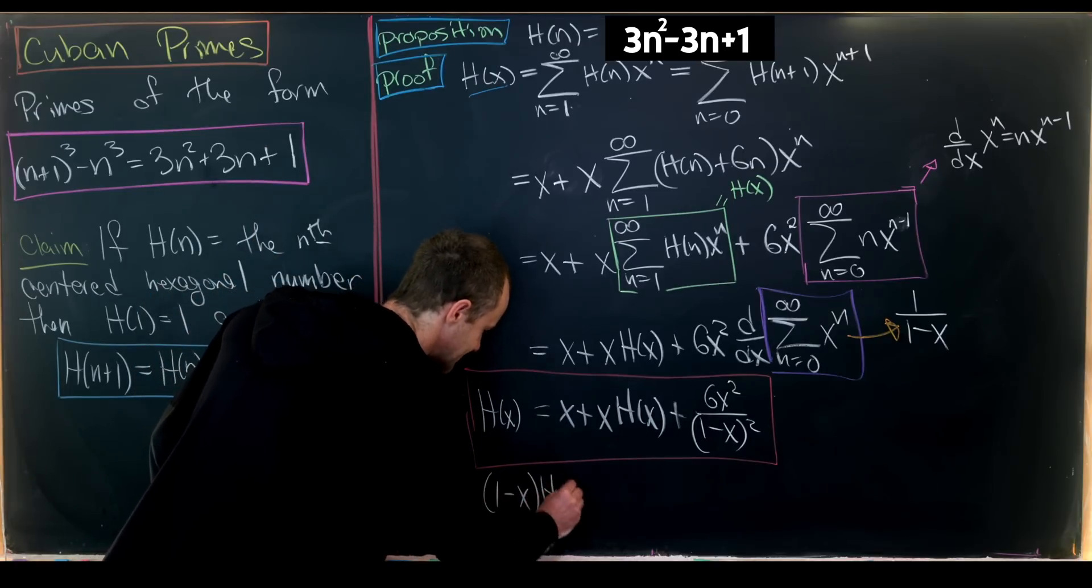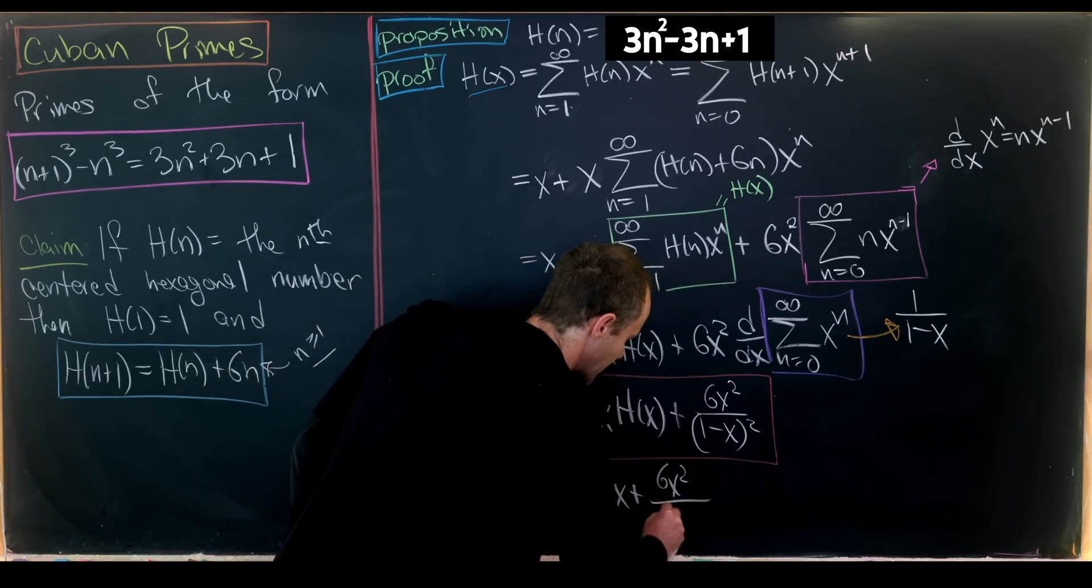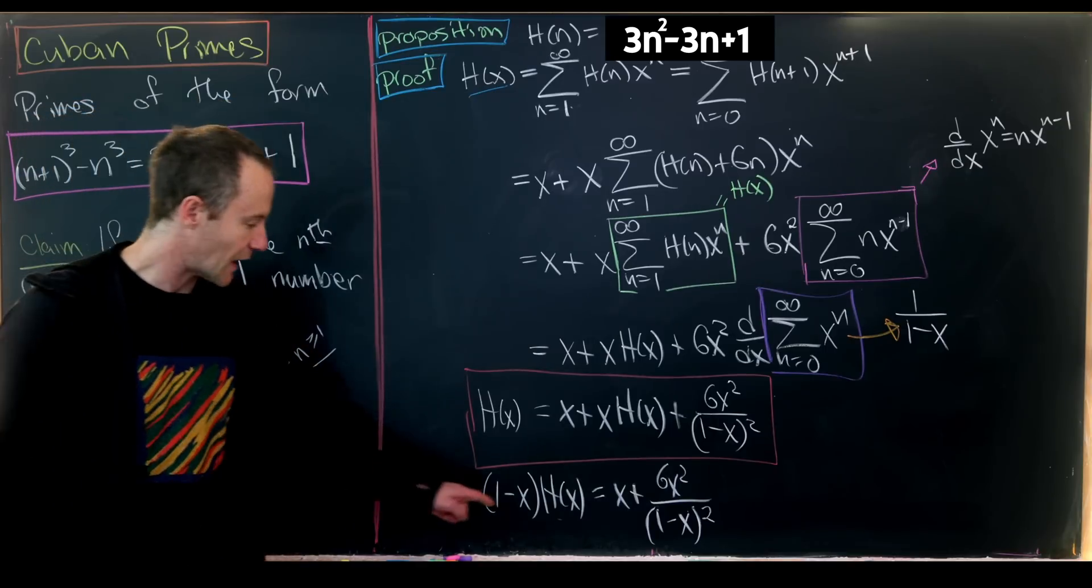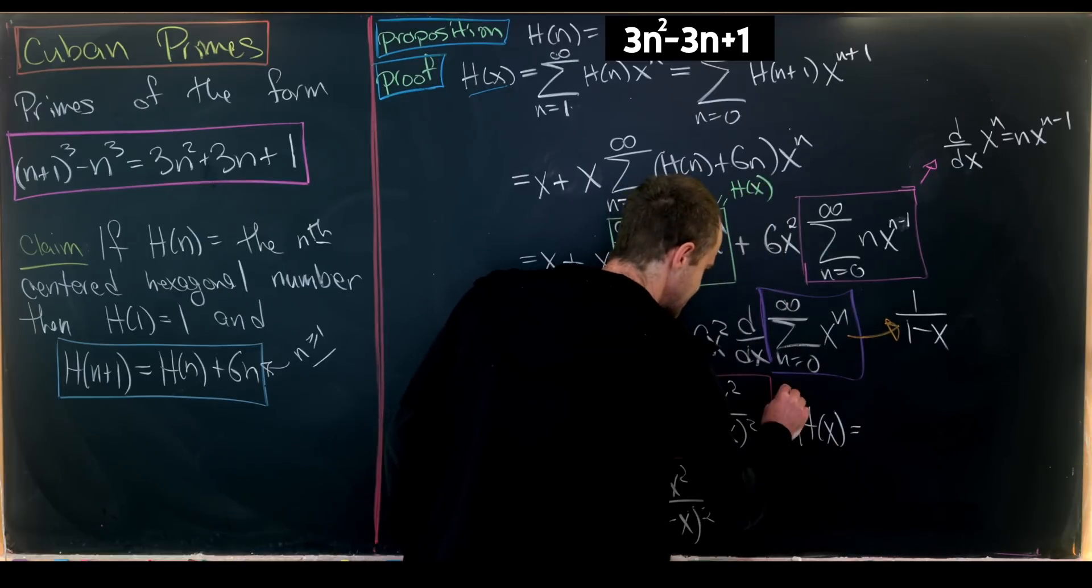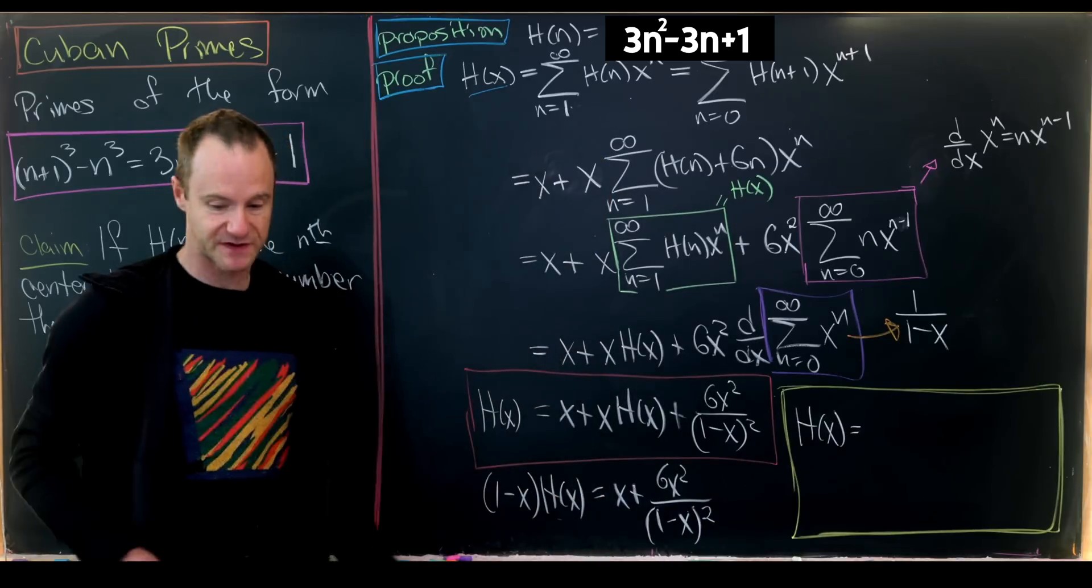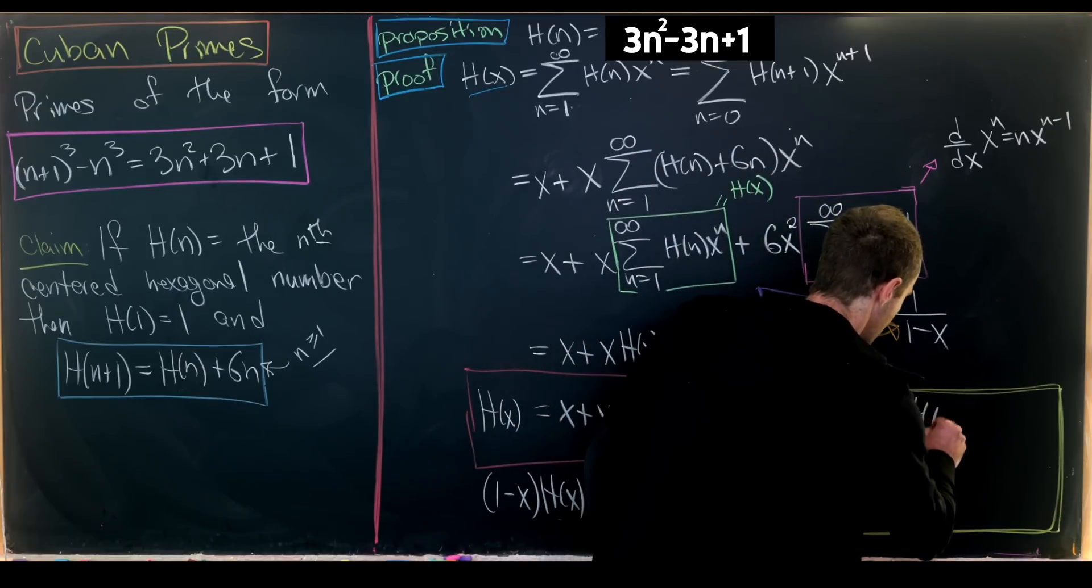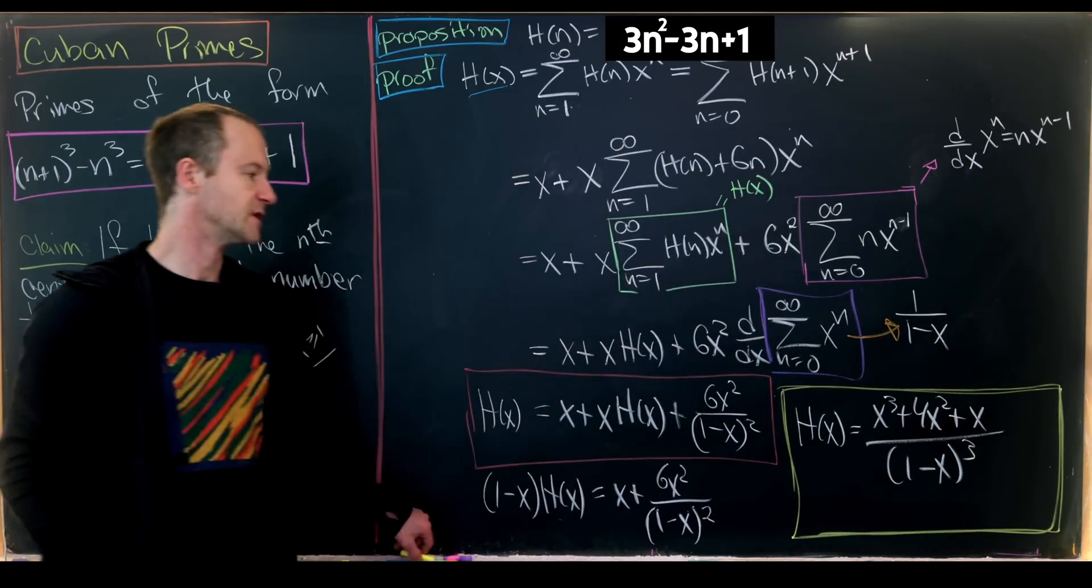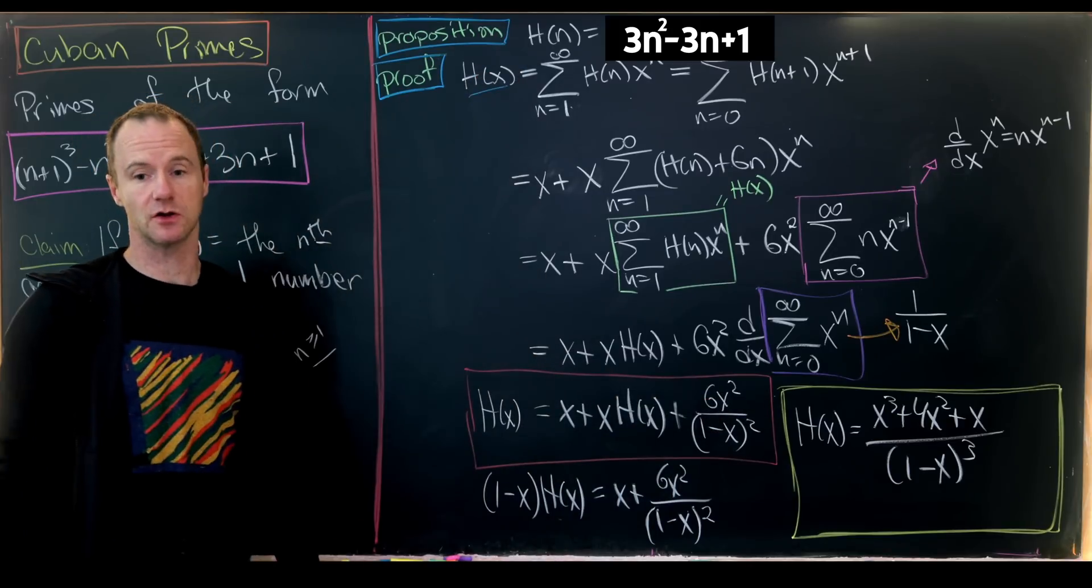We have the functional equation (1-x)H(x) = x + 6x²/(1-x)². Dividing by (1-x) and combining with a common denominator gives H(x) = (x³ + 4x² + x)/(1-x)³.